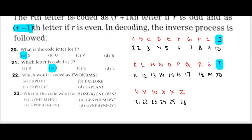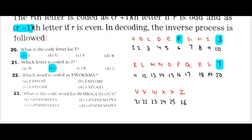Now for questions 22 and 23 — one minute. First, F is an even number, so E comes before it. All options have E. Then check L — L is correct. 99% O is also correct. The last letter is S. S is an odd number. For odd, you go one forward — so T should come. So the answer for question 22 should be D.